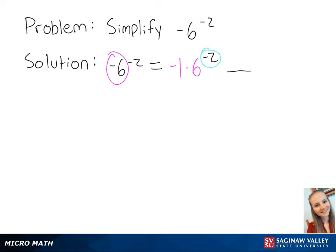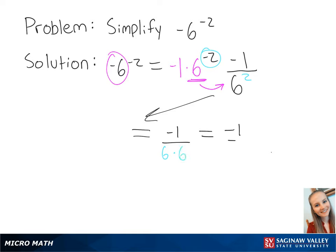A negative exponent becomes positive when the base of 6 is put in the denominator. 6 squared is equal to 6 times 6, so now we have negative 1 over 6 times 6, which is equal to negative 1 over 36. This is the final answer.